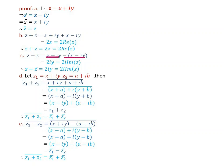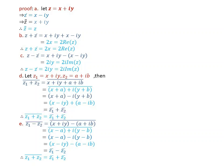Continuing: z minus z-bar equals x plus iy minus x minus iy equals 2iy, equals two i times the imaginary part of z. Therefore z minus the conjugate of z equals 2iy equals 2i times the imaginary part of z. Next, proof of the conjugate of z1 plus z2.